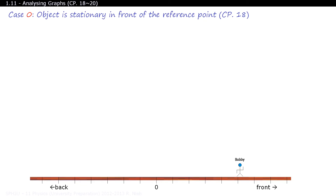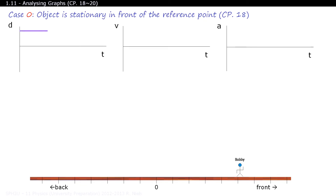Let's track your data with a position-time graph. You can see that all the data points are above the timeline when you're in front of the reference point. When you look at the slope of the position-time graph, it's at zero, so your velocity is at zero. And since the slope of the velocity-time graph is also at zero, your acceleration is also at zero.